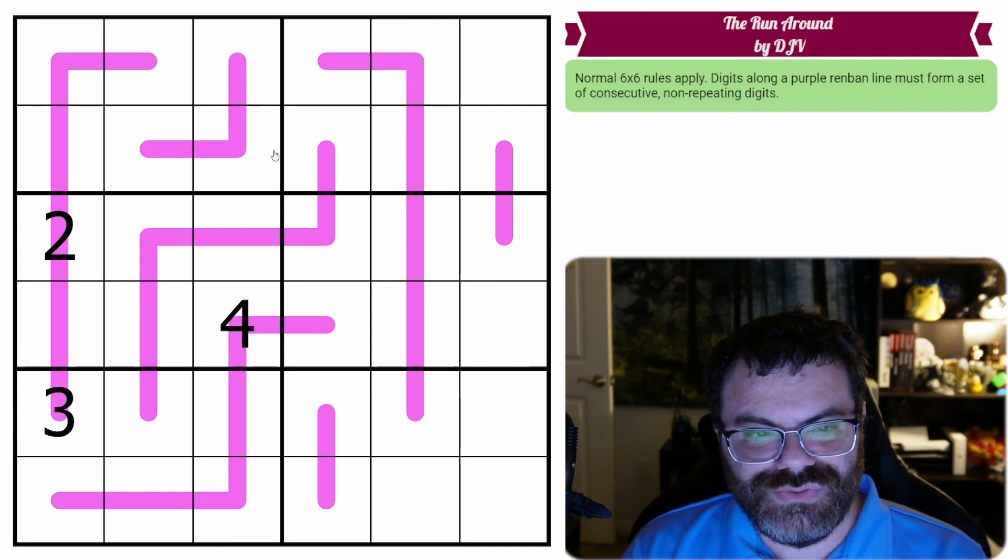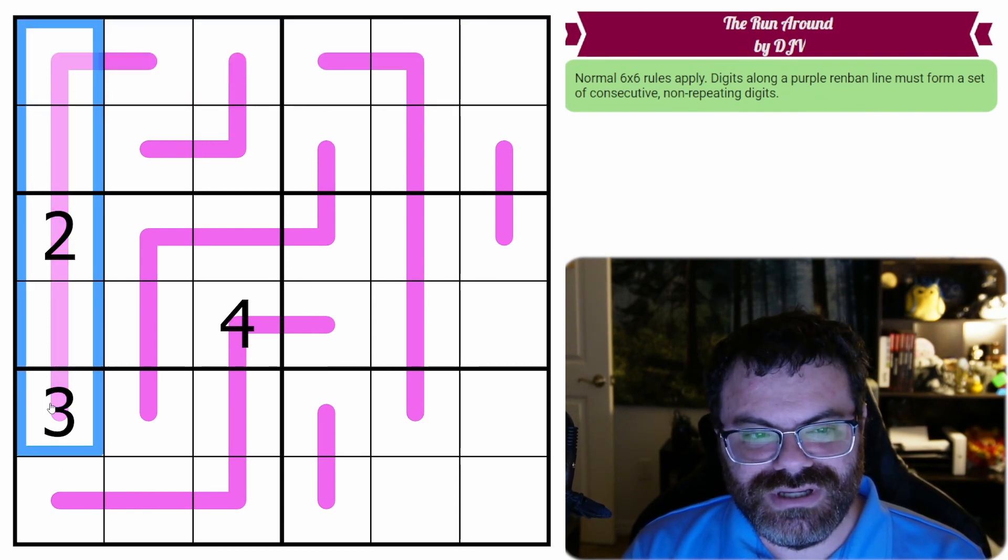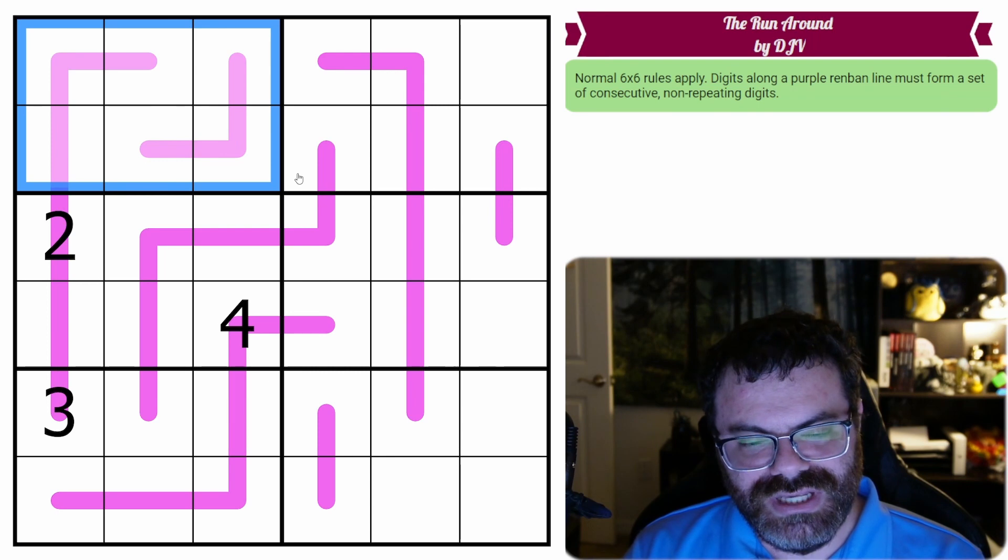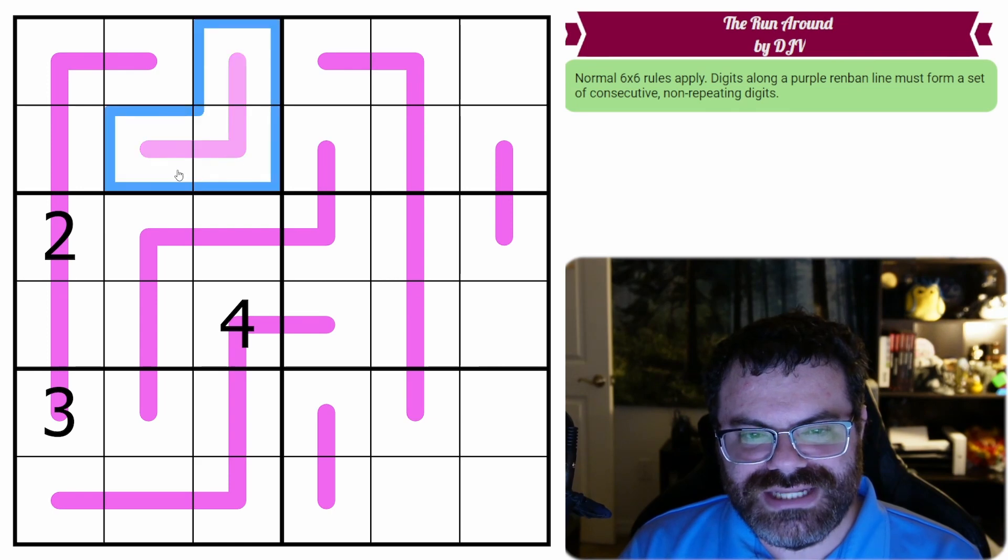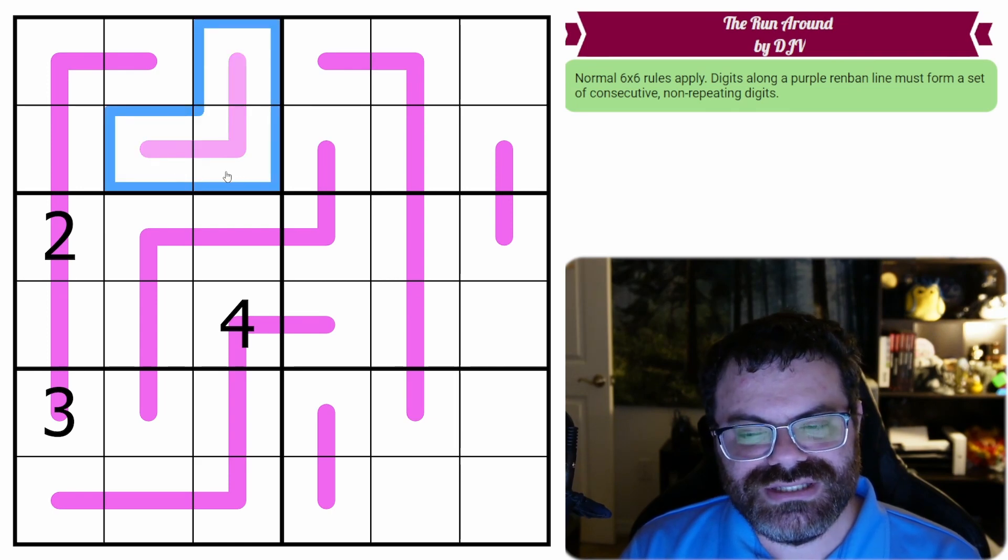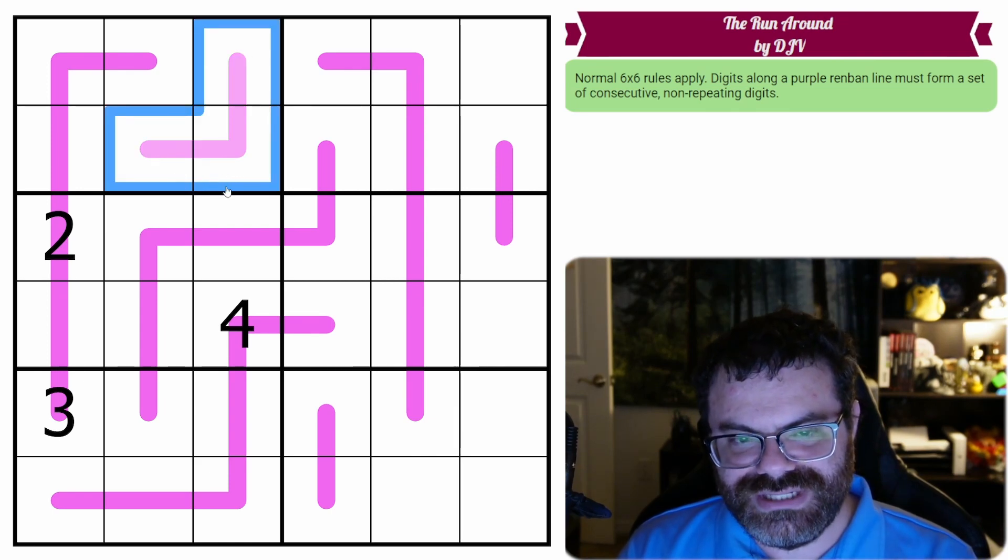So we have normal 6x6 Sudoku rules. In every row, every column, and every 2x3 box, we are placing the digits 1 to 6 exactly once each. Additionally, we have these purple lines in the grid. These are RenBand lines, so they contain a set of consecutive non-repeating digits.